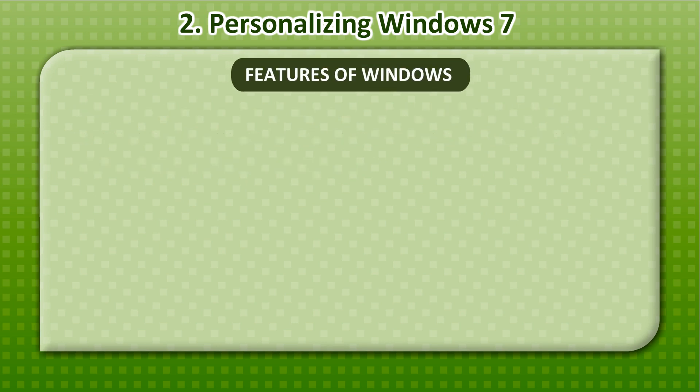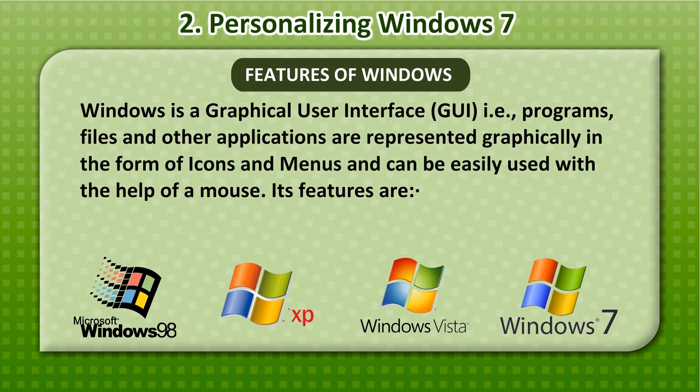Features of Windows: Windows is a graphical user interface, GUI, where programs, files and other applications are represented graphically in the form of icons and menus and can be easily used with the help of a mouse.